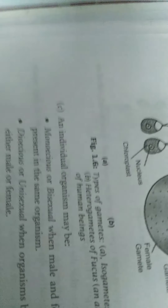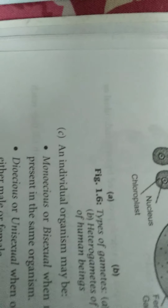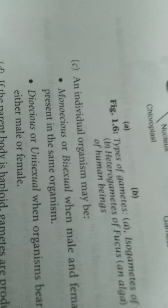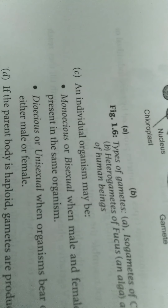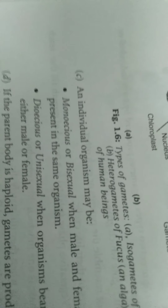Dioecious plant or heterothallic plant or unisexual plant — where male and female flowers are present on separate plant bodies. It is a unisexual condition. Example: papaya, date palm.